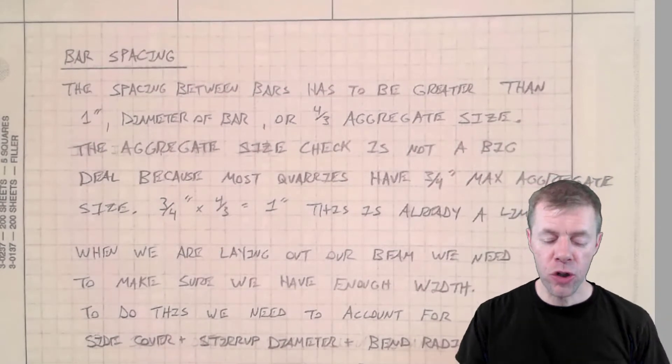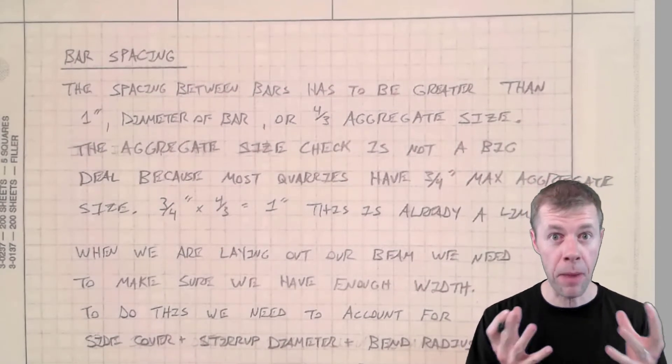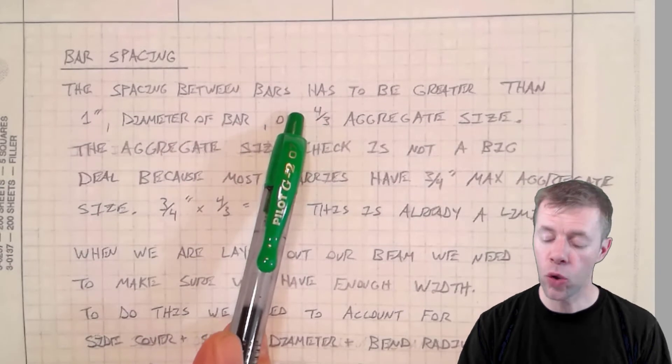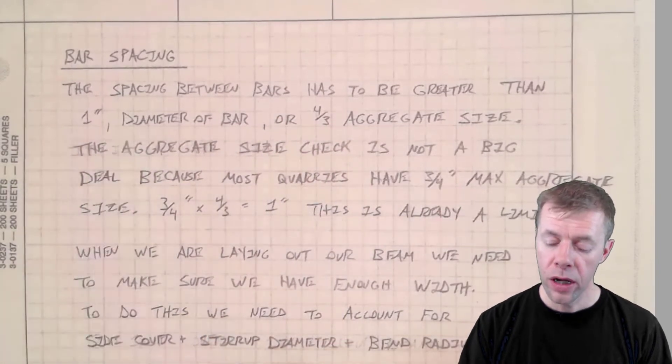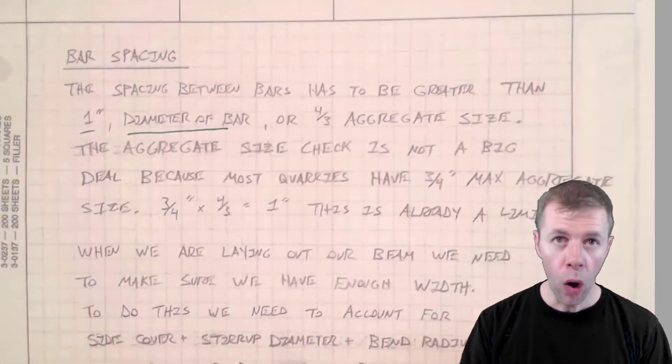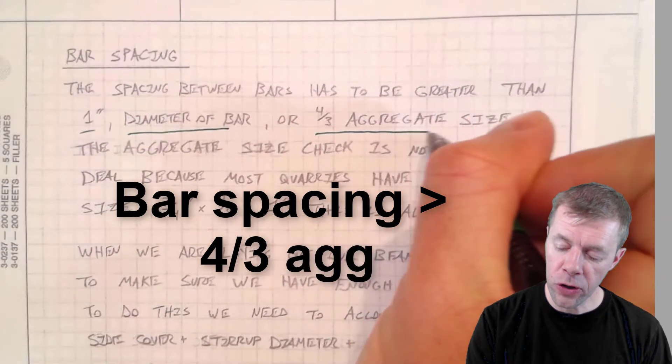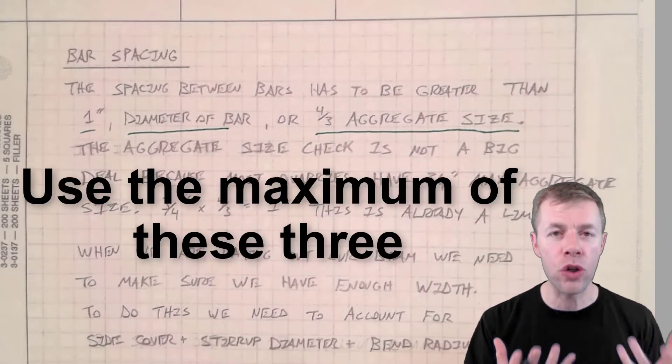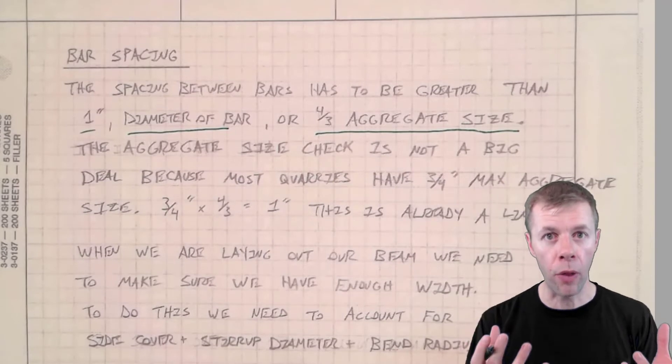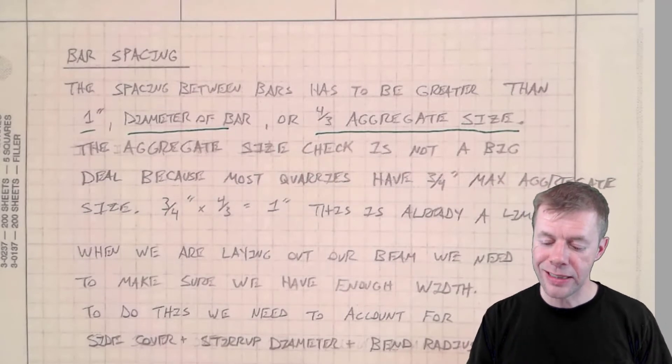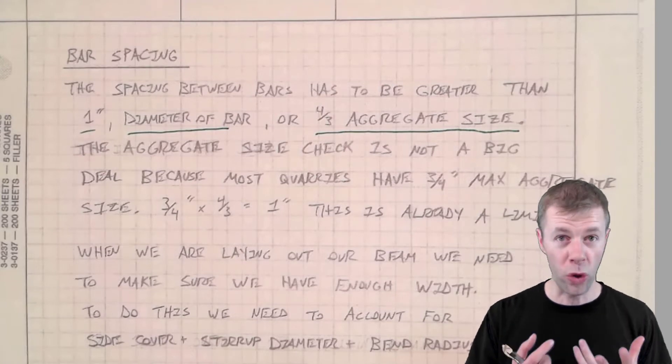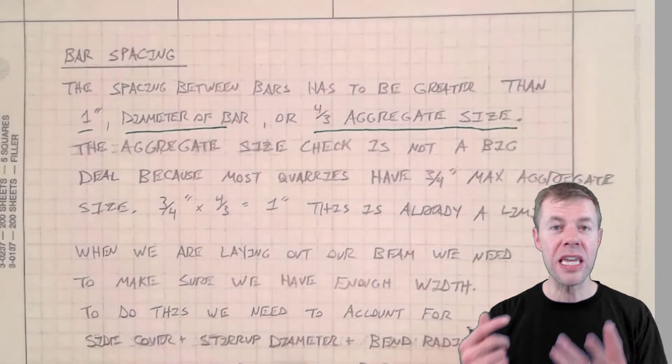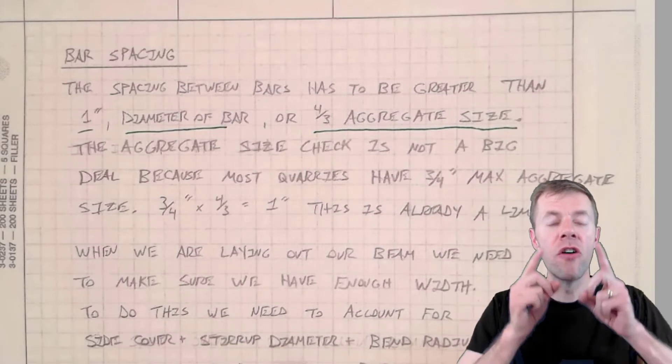When you're laying out your bars in your reinforced concrete beam or column or any member that you're going to fill full of concrete, you have to make sure that the spacing between your bars has to be greater than one inch or the diameter of the bar or four-thirds times the aggregate size. How do I know what kind of aggregate they're going to be using when I make my beam or my column? The aggregate size check is not that big of a deal because most quarries have a three-quarter inch maximum aggregate size. Actually, I would say this is the most common size aggregate just for this reason.